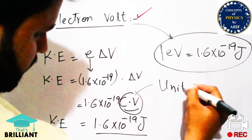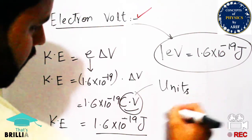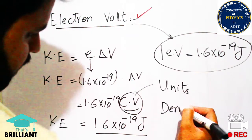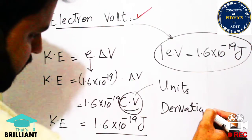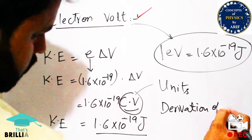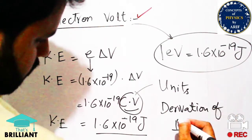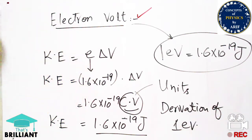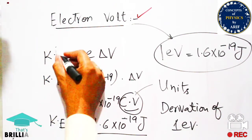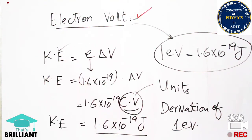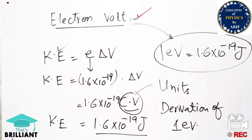This is the final expression for the electron volt. We have discussed the units and the derivation of electron volt in this video. If you have any questions related to kinetic energy, potential energy, electron volt, or potential difference between two charges, you can contact me.